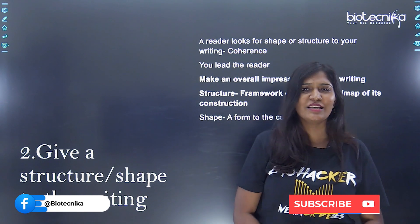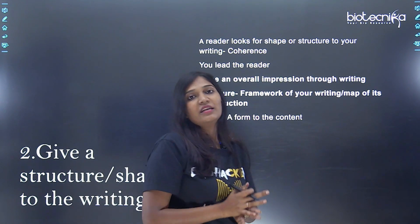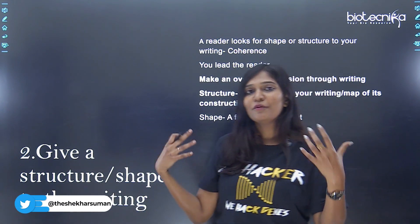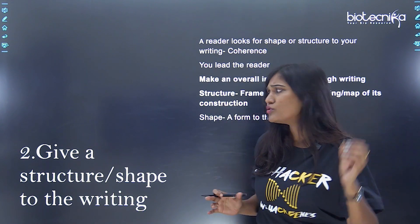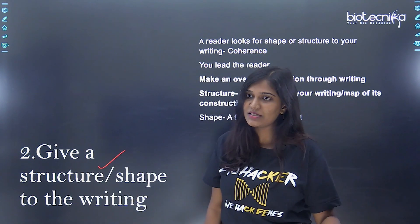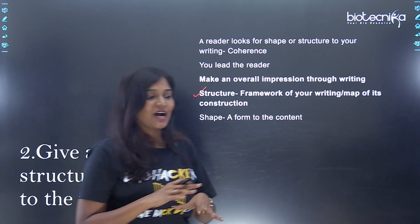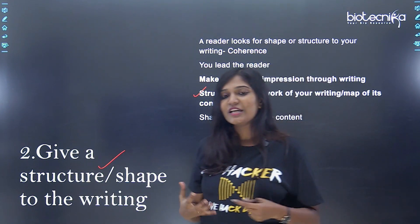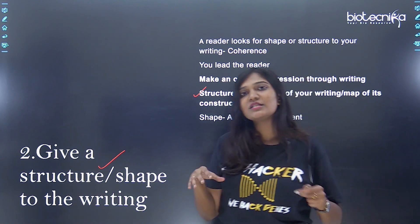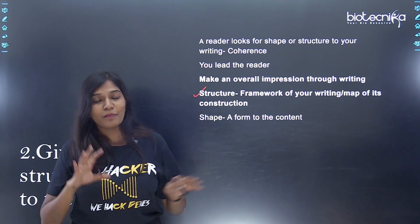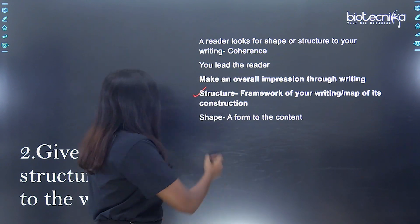The second important thing: give a structure or a shape to your writing. Now you know what you're going to write, but it has to be coherent. If you put random information scattered throughout, the reader will get confused. Always give a structure or shape — what I call a framework. Suppose you're building a house: an engineer gives you a blueprint for construction. Similarly, when you start writing, you need a blueprint for your writing.